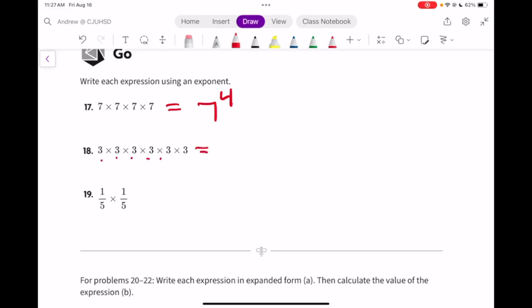Number 18, there's 1, 2, 3, 4, 5, 6 threes. We say that's 3 to the 6th power. On number 19, if you have a fraction, just make sure you put the fraction in parentheses because we want the 1 and the 5 to get the power, and the power is 2 because it's repeated twice.